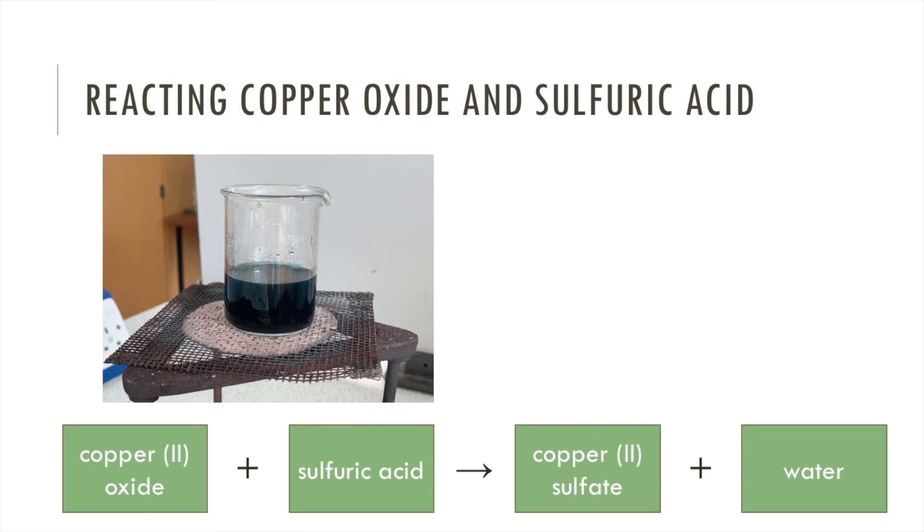Recall the equation for the reaction. In the beaker you've got copper sulfate, which is the product, and that's dissolved in water, your other product. So that's what our liquid is in here, it's copper sulfate dissolved in water. There's also going to be a solid, and that's any unreacted copper oxide. We want to separate the liquid and the solid, and the way you do that is step two, it's filtration.